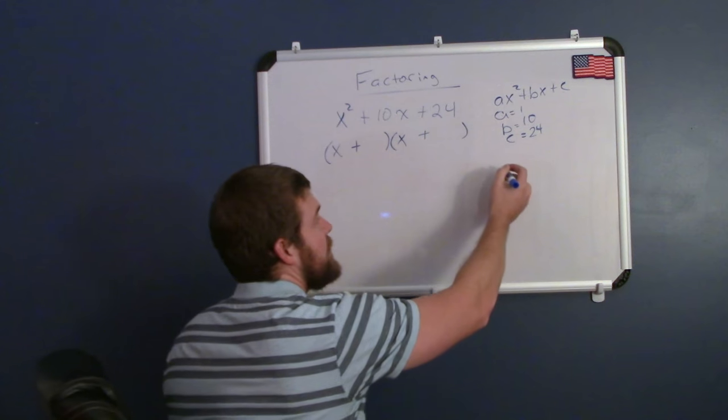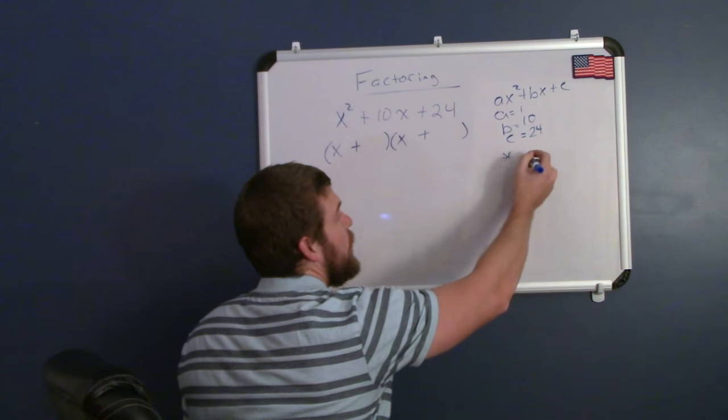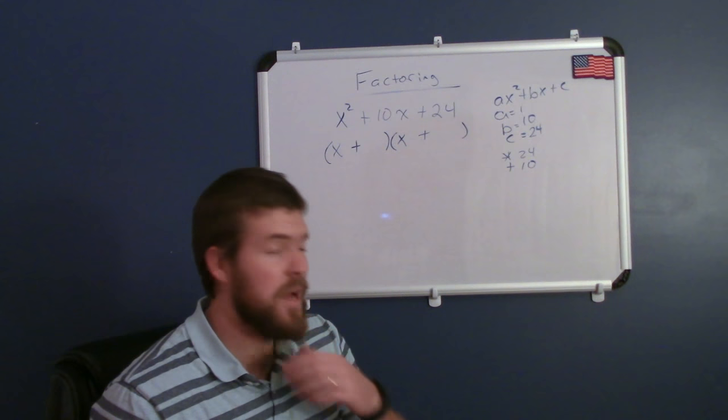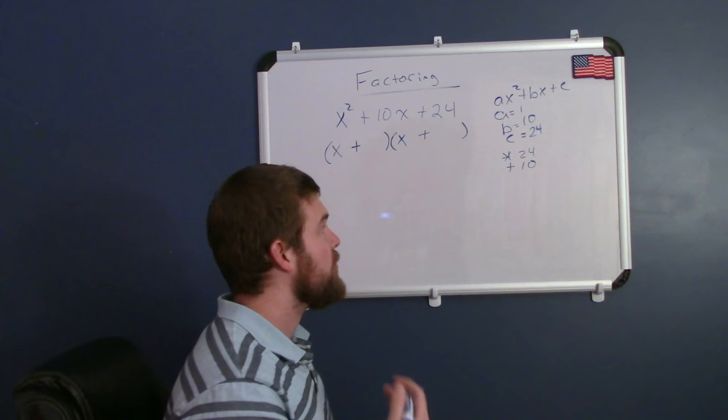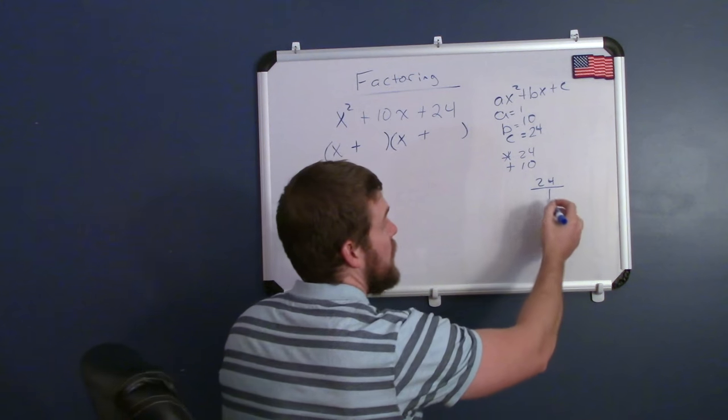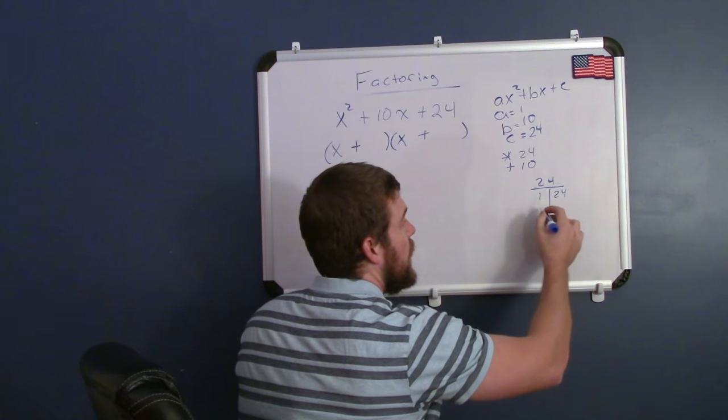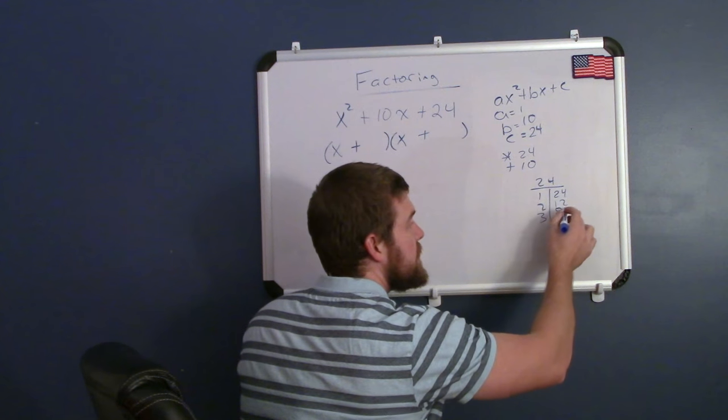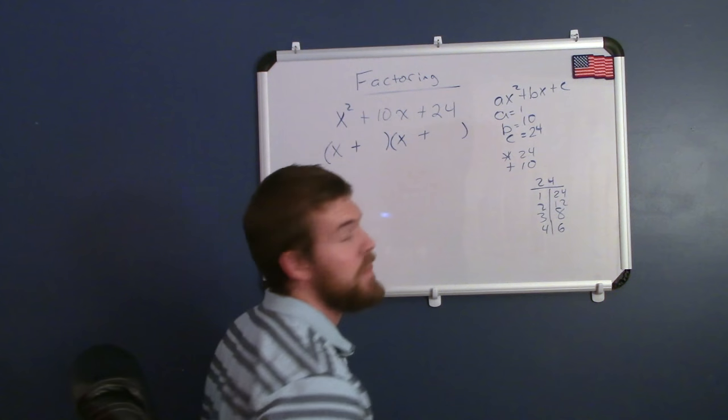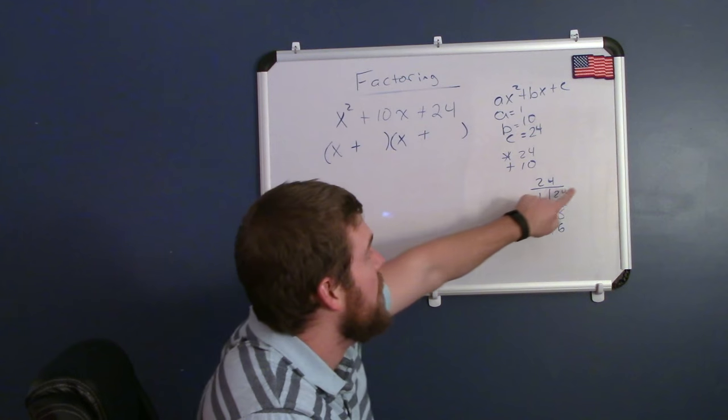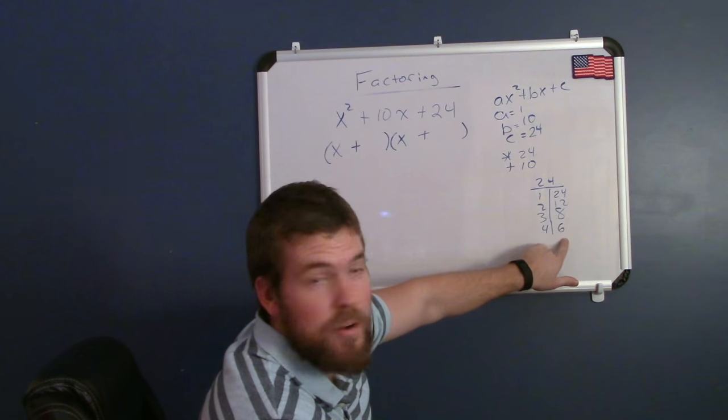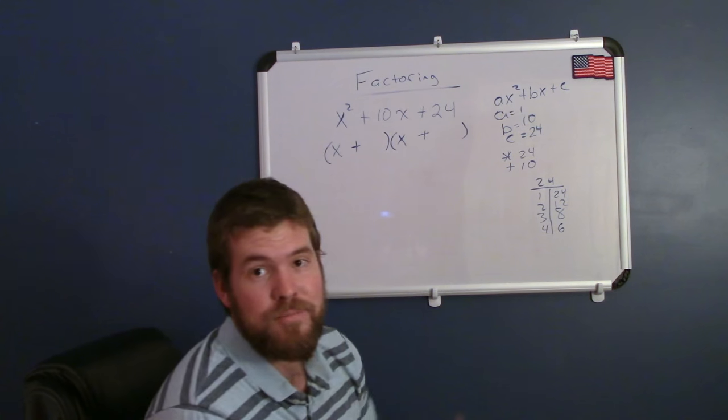So now I just want to ask myself the question: what two numbers multiply to be 24 but add to be a positive 10? If this is your first time doing it or you're not as comfortable, I strongly recommend writing out 24 and all the multiples of 24: 1 and 24, 2 and 12, 3 and 8, 4 and 6. 5 does not go into 24. I usually start with 1 and the number itself and work my way up, and when these two numbers come together and we can't use 5, we're done.